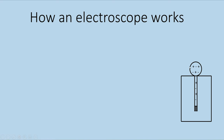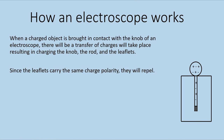If we put a positively charged object in direct contact with a neutral electroscope, by the same rule of transfer of electrons, electrons transfer from the electroscope to the positively charged object, leaving the knob, rod, and leaflets all positively charged — they also repel. When a charged object contacts the knob, a transfer of electrons takes place, charging the knob, rod, and leaflets, so the leaflets carry the same polarity and repel.